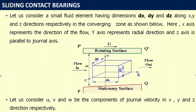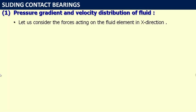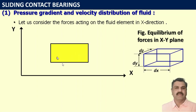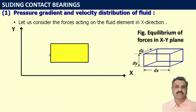Let U, V, and W be the components of journal velocity in x, y, and z directions respectively. For the first step — pressure gradient and velocity distribution — consider the forces acting on the fluid element in the x direction. The yellow portion represents the lubricating film with dimensions dx, dy, and dz. Two kinds of forces act on this lubricating film: one due to the pressure of the fluid and the second due to shear stress.